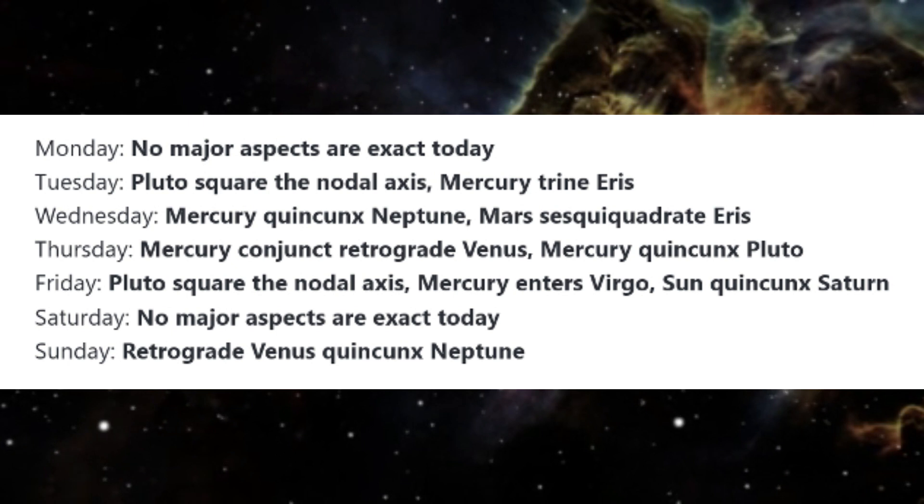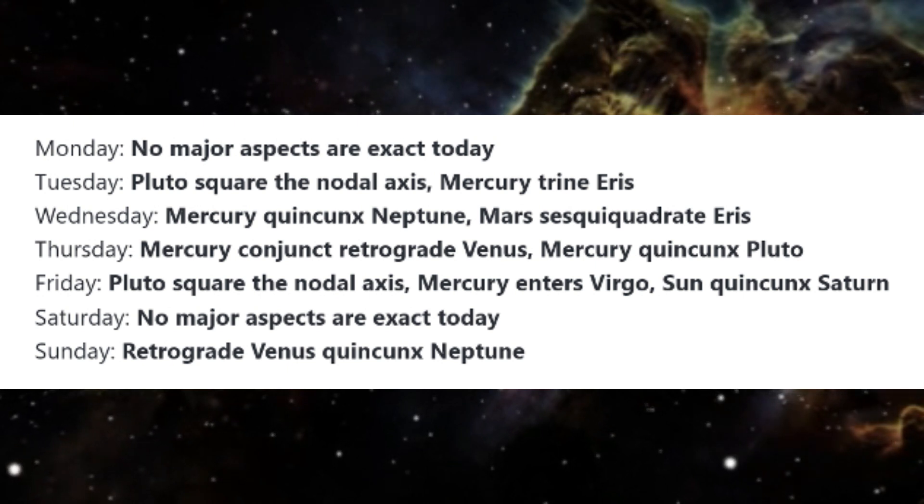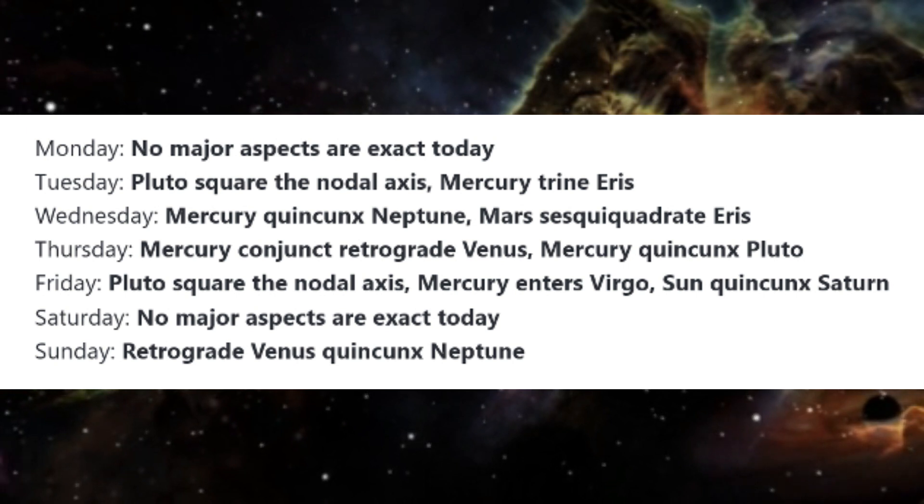On Wednesday, Mercury is quincunx Neptune. There is some mental fog today, a lack of clarity in how we think or communicate. And on Wednesday, Mars is sesquiquadrate Eris. It is easy to become irritated with this aspect, as the urge to have what we want, when we want it, is heightened.